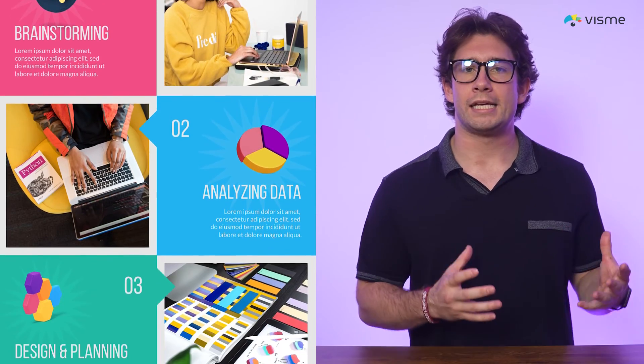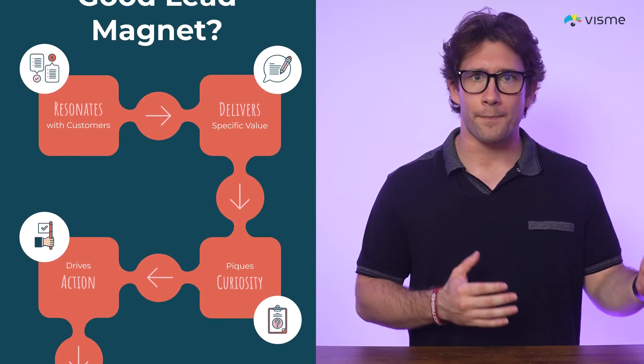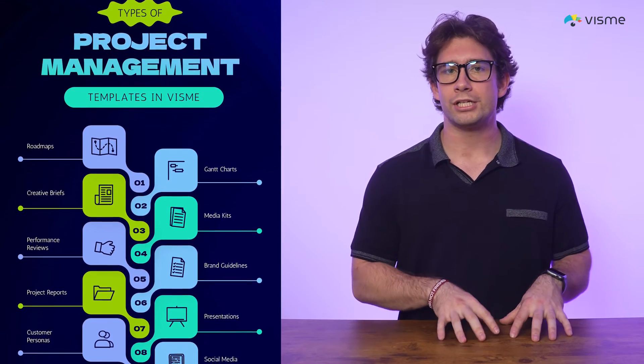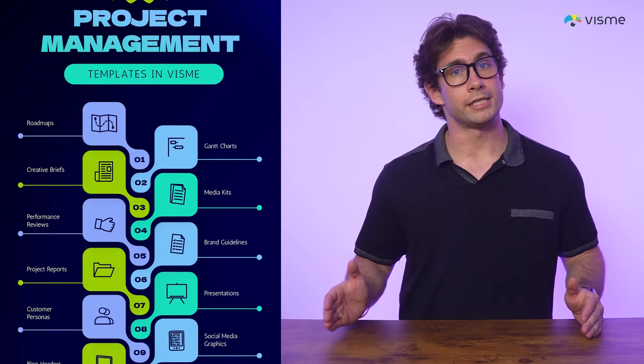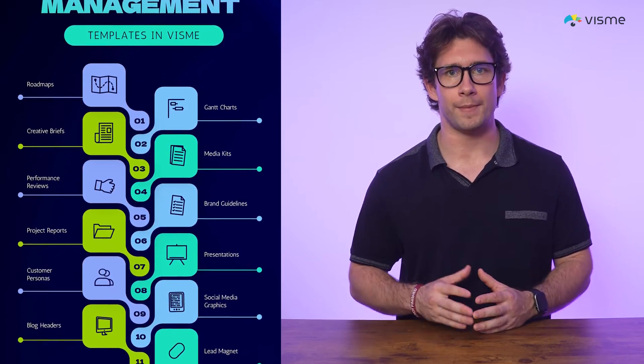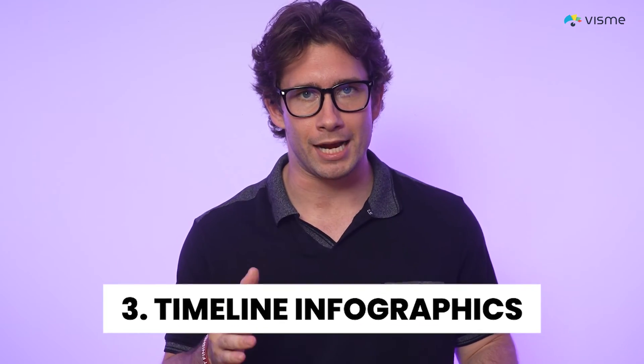The second type is informational infographics, designed to explain complex topics in a structured and visually engaging way. They combine visuals with concise text, guiding viewers through each point in a logical flow. This type is ideal for educational content, step-by-step guides, and research breakdowns, especially for B2B audiences. For example, if you're explaining a new company policy or guiding employees through a process, an informational infographic can outline each step clearly, improving comprehension and retention.